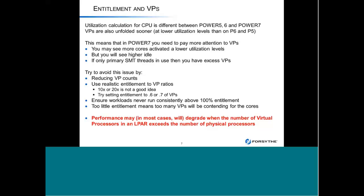In order to get the RPerf quoted for Power 7, you actually need to be using all four threads on each core. If you're only using 2 out of 4 threads, you're going to lose about 20% of your performance, so that RPerf rating drops. With fewer VPs you can actually get more performance — it's the whole throughput versus speed discussion.